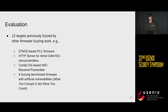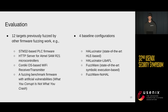We evaluated our framework on 12 targets previously used by FASPA and other work — that is the baseline benchmark — including STM32-based PoC firmware, HTTP servers for ATMEL chips, Contiki OS-based Wi-Fi receivers, and a benchmark to test the vulnerability detection capabilities of our approach, which is toy firmware with artificial vulnerabilities we have to find. We then compared our approach to four baseline configurations: state-of-the-art approaches in firmware re-hosting and fuzzing.